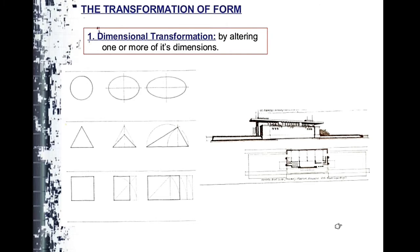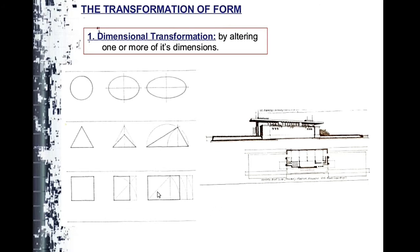Now we move to transformation of form. There are three types: dimensional, subtractive, and additive — with additive being the most applied method in architecture. Dimensional transformation means we alter or change the appearance of a form: we can stretch or shrink it. For example, a circle becomes an oval or oblong, a perfect equilateral triangle becomes isosceles or acute-angled, and a square can be made into a rectangle — either wider or taller.